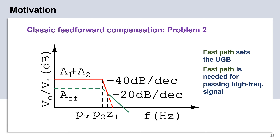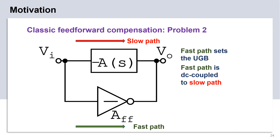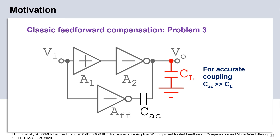Now, let us look at a different issue. We have already seen that the fast path sets the UGB and is required only for high-frequency signals. Another problem with the conventional feed-forward architecture is that the slow path is DC coupled to the fast path even when the fast path is required only at high frequencies. The fast path sets the UGB and for higher UGBs, the fast path must be sized large. This reduces the output resistance at the VO node, thus the slow path gain is reduced. This problem can be solved by AC coupling the slow and the fast paths. However, for accurate coupling, the coupling capacitor must be much larger than the load capacitor. For large-capacitive loads, this may not be feasible.